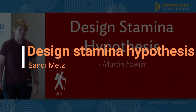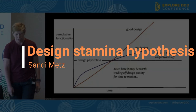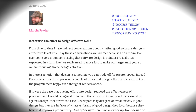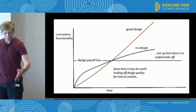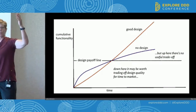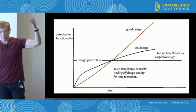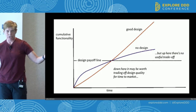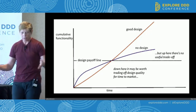The Design Stamina Hypothesis — he uses this chart to illustrate it. The vertical axis is cumulative functionality: how much you get done over time. Time is on the horizontal axis, passing from left to right.